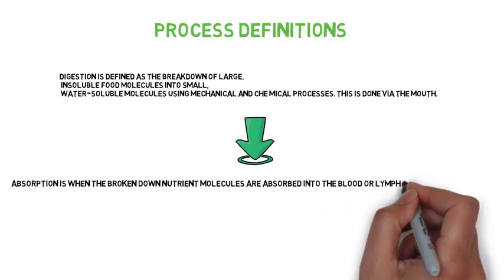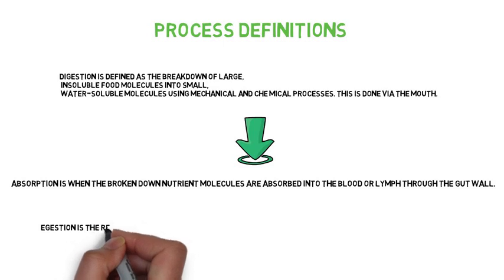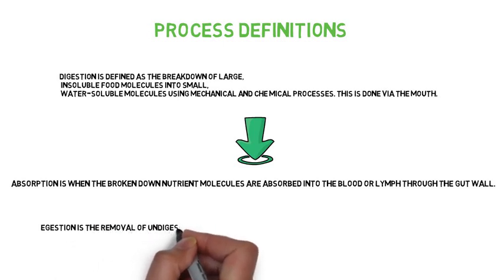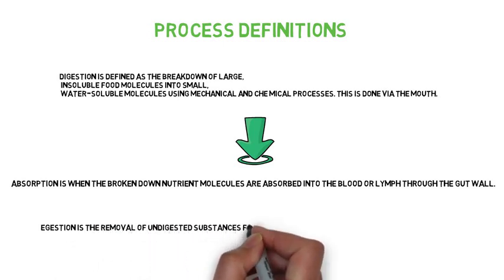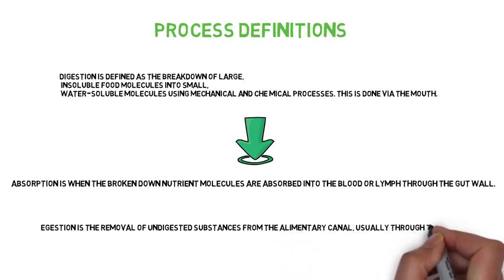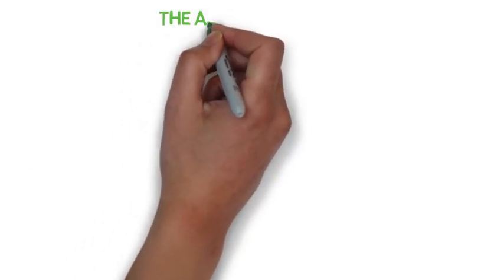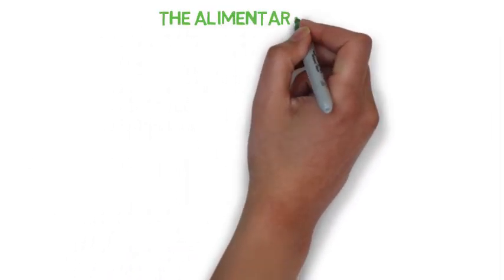Egestion is the expulsion of undigested food from the digestive tract via the anus — the removal of undigested substances from the alimentary canal, usually through the anus. The alimentary canal is defined as the entire passage through which food travels for the process of digestion, from the mouth through to the anus.